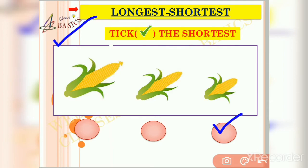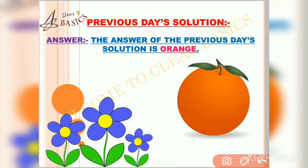Now friends, it's time to discuss the answer of the previous day's surprise question. Check your answer — the answer is orange. It is a color we can get by mixing red and yellow. I hope you all answered it correctly.